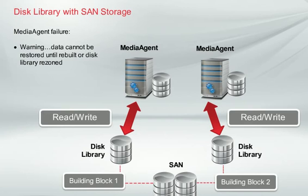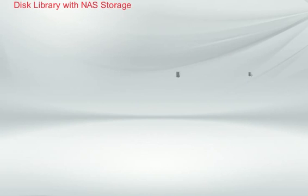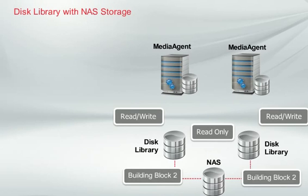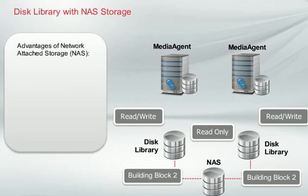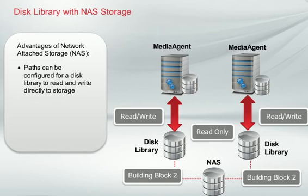Let's look at one more method to configure the disk library. Can you see that this method's path to the storage is directly through the Network Attached Storage, or NAS, hardware? This gives NAS an advantage because paths can be configured for a disk library to read and write directly to storage. This is done by using CIFs or NFS UNC paths. Commvault recommends configuring separate disk libraries in the Simpana software. Separate building blocks should still be used for each media agent providing read-write access to a disk library.